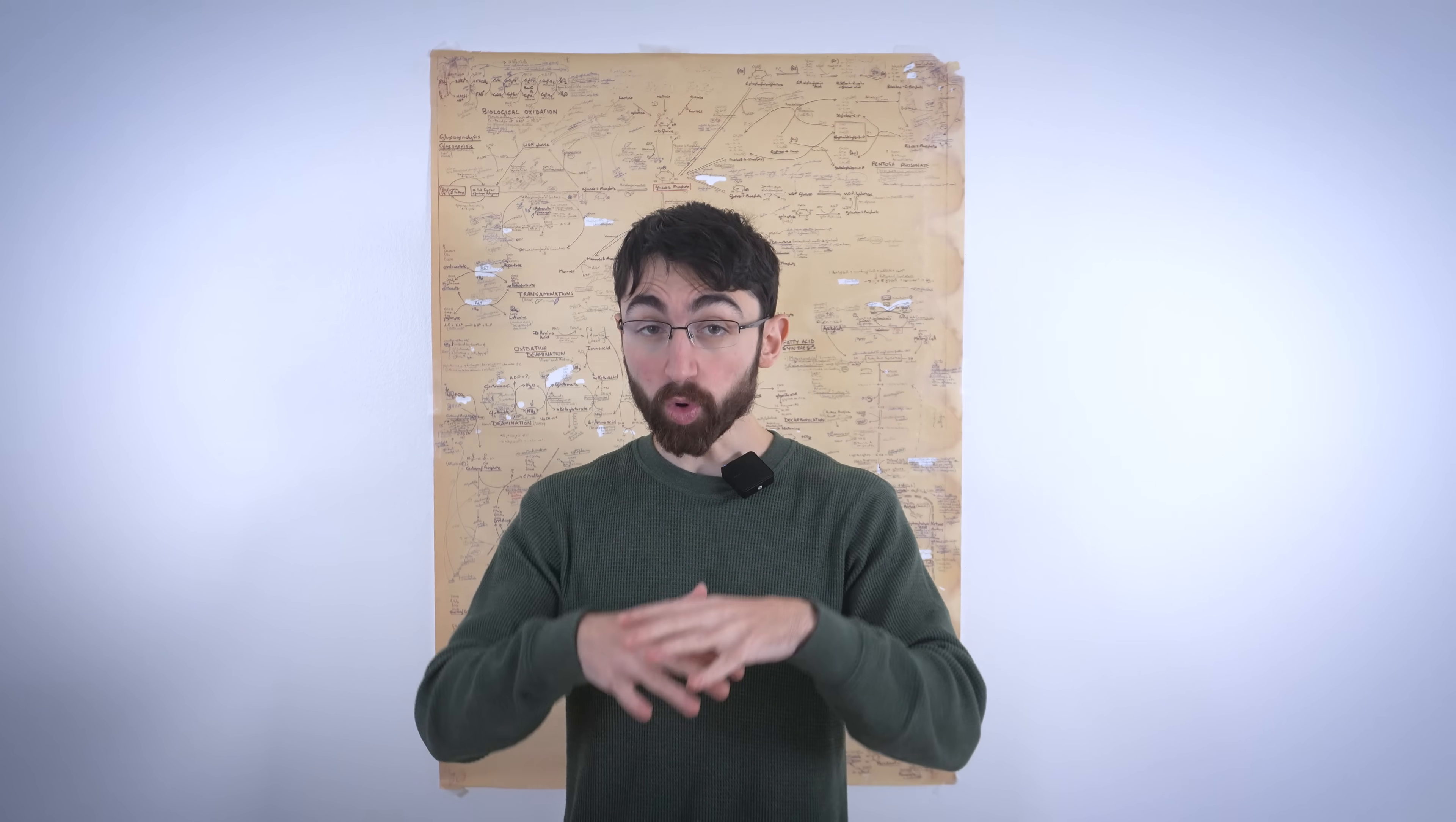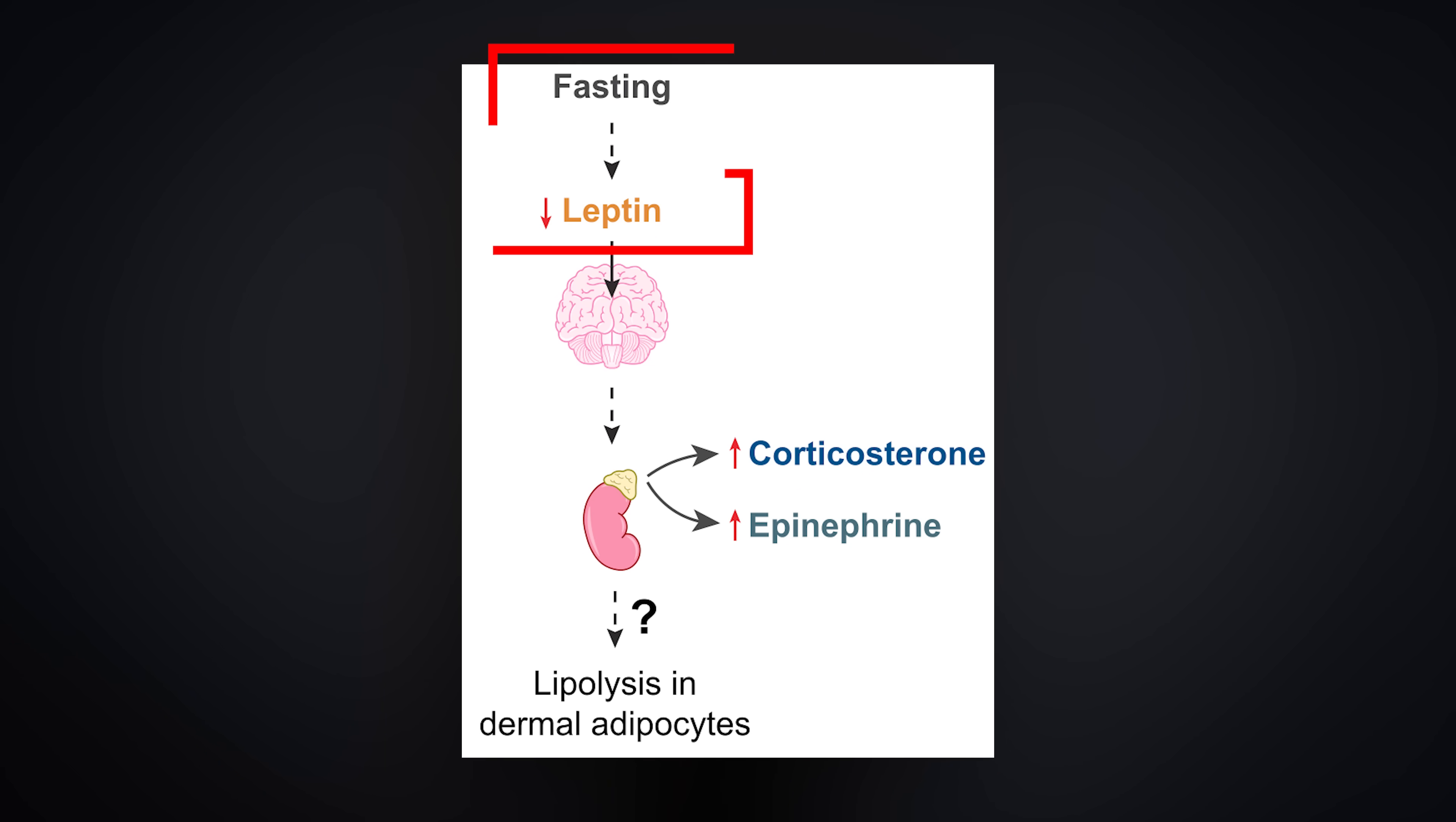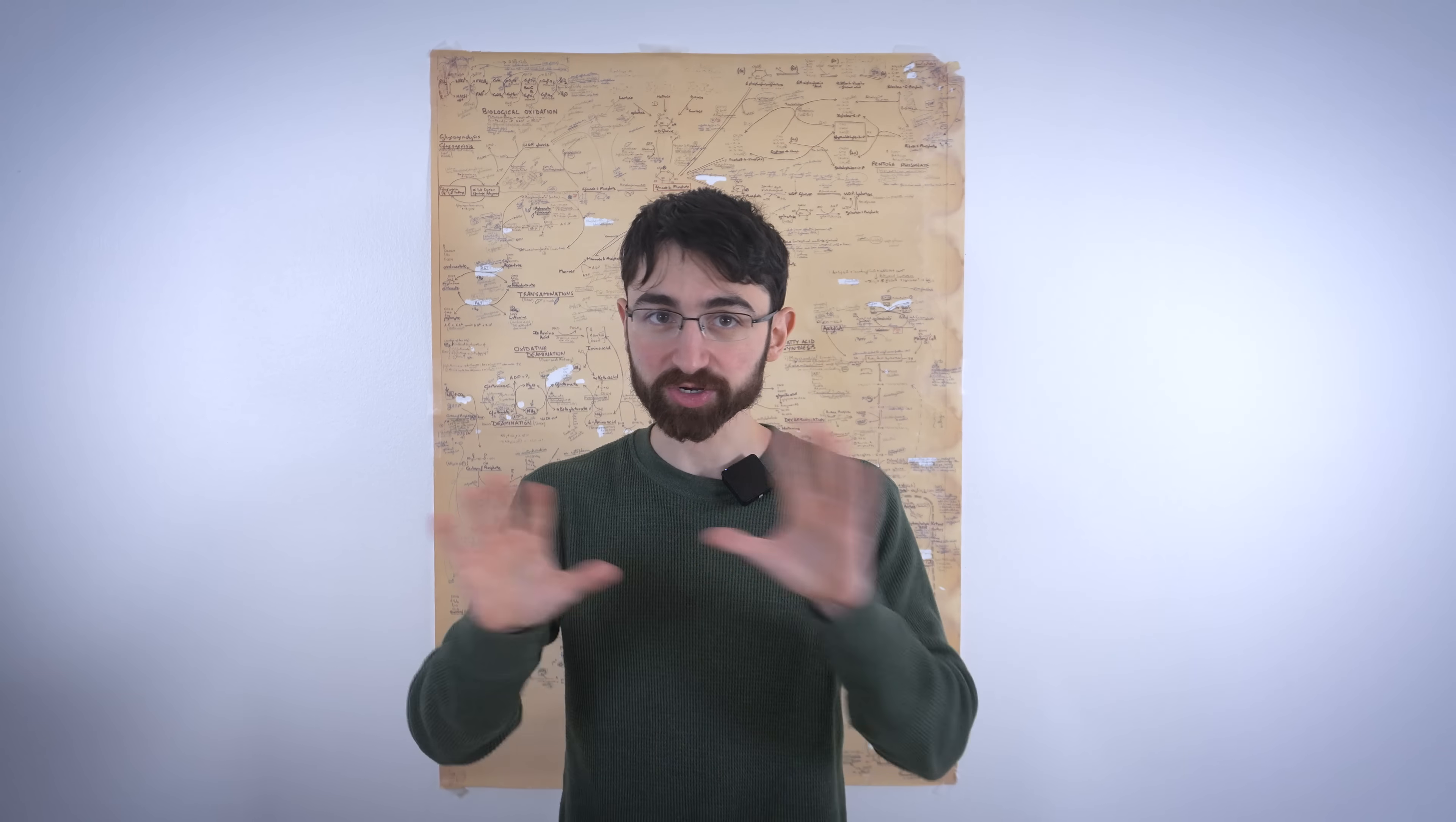They then went on to find that the whole system depends on the adrenal glands. And here's how it works. Upon fasting, leptin levels, leptin's a hormone that's released from fat cells, drop, which signals the brain to activate the hypothalamic-pituitary-adrenal axis, which tells the adrenals to make stress hormones, epinephrine and cortisol. And those hormones trigger fat burning in those dermal adipocytes, those fat cells in the skin, which then release free fatty acids onto the hair follicle stem cells. In fact, as a cool aside, when the adrenal glands were removed from mice, fasting no longer caused death of the hair follicle stem cells. So it is dependent on the adrenal glands, although I don't recommend having your adrenals removed to spare your hair. I'll have a better solution for you.